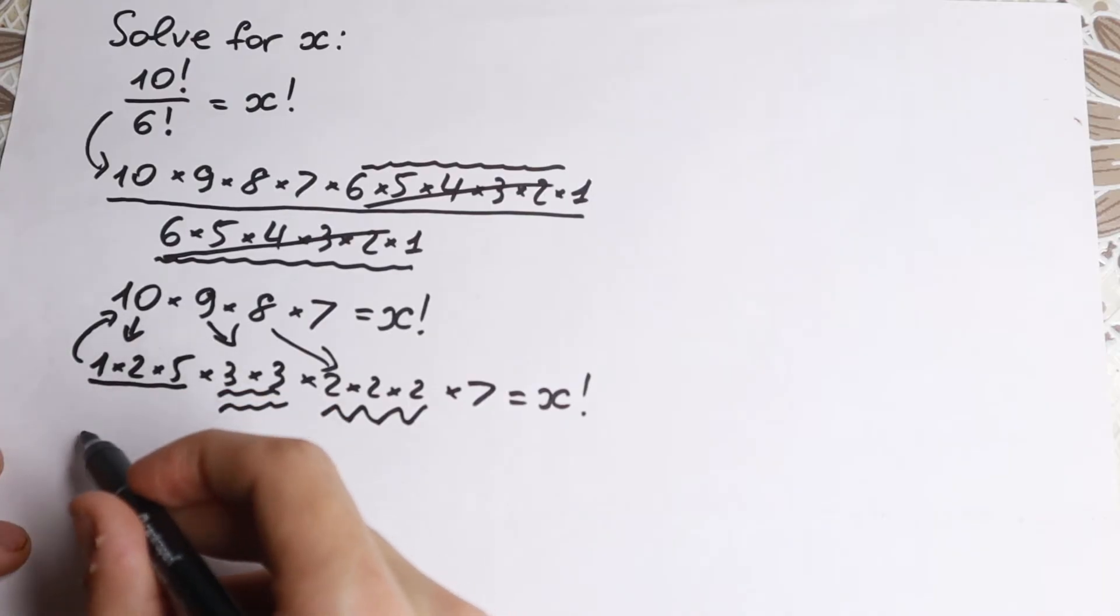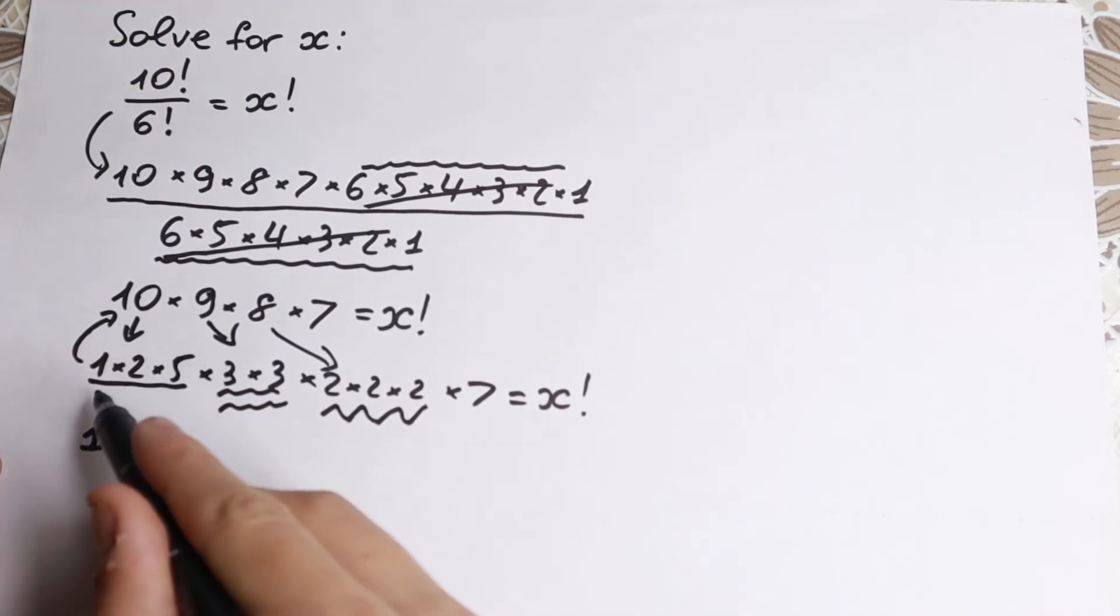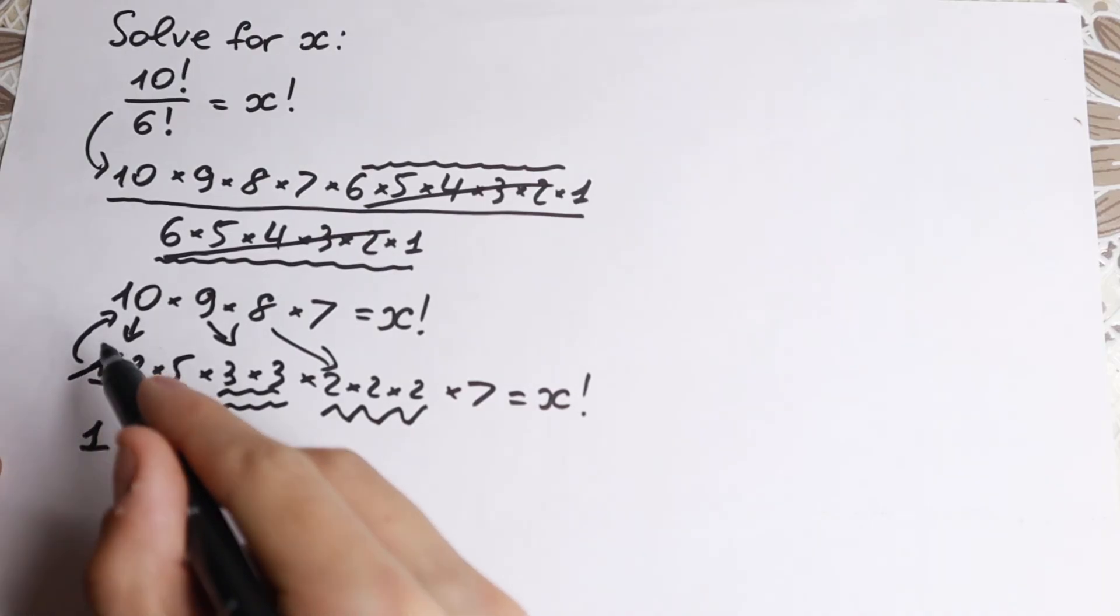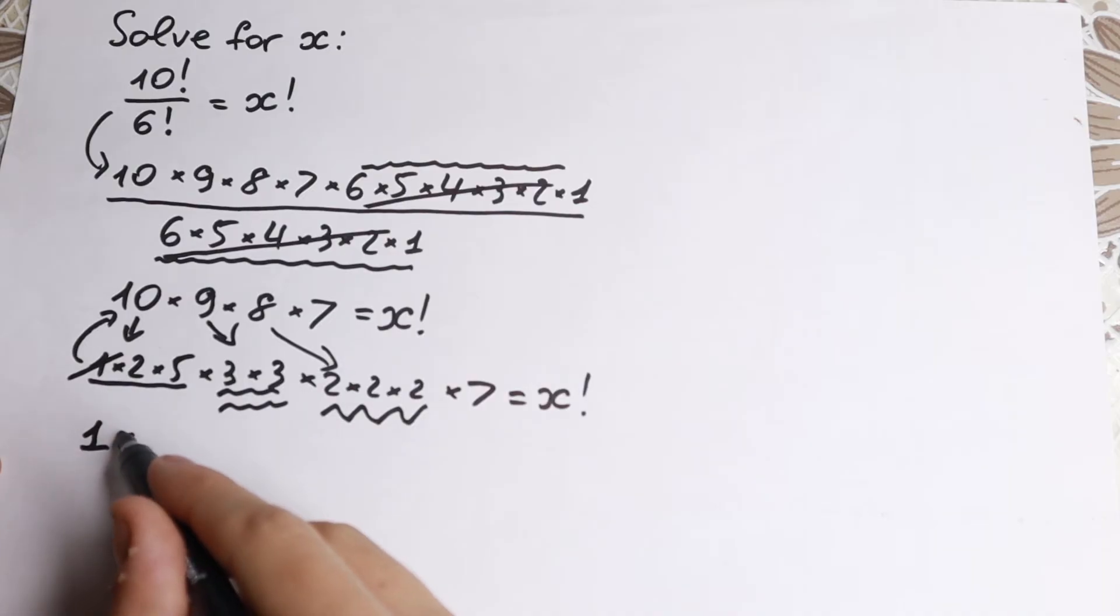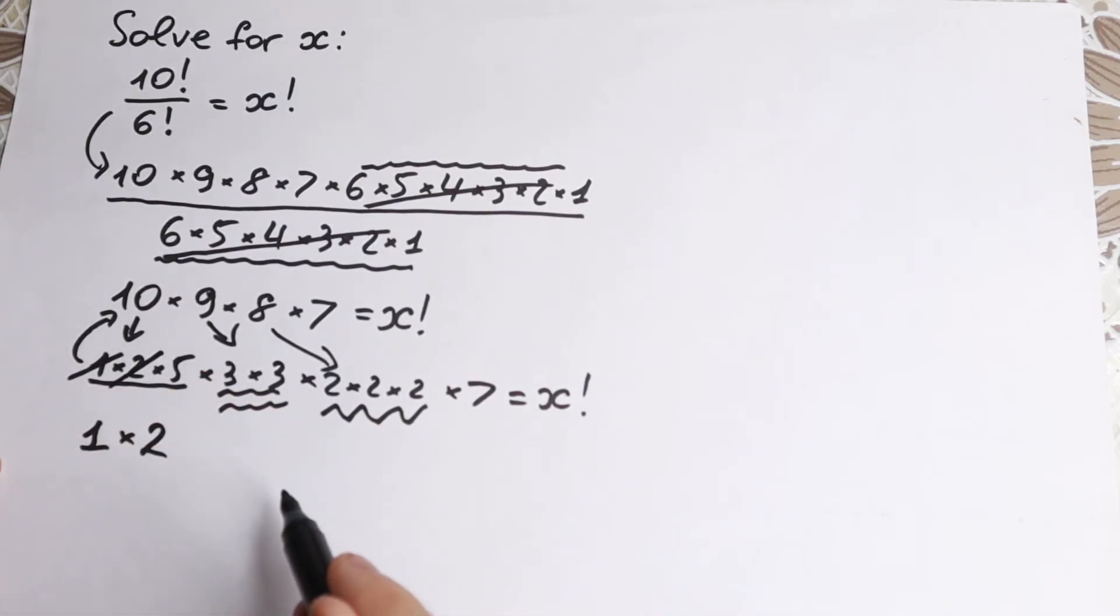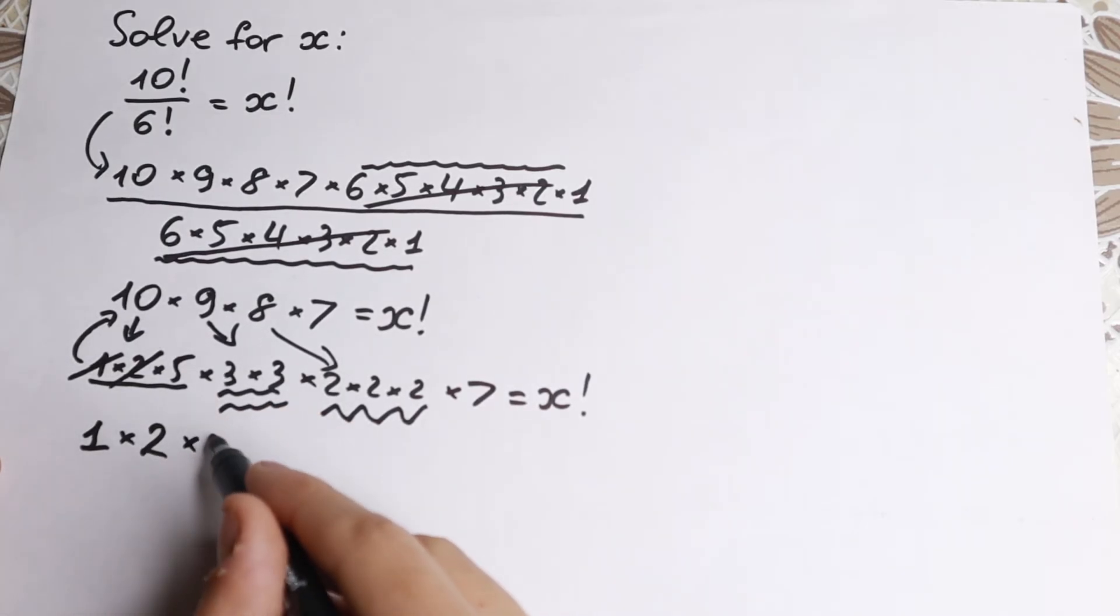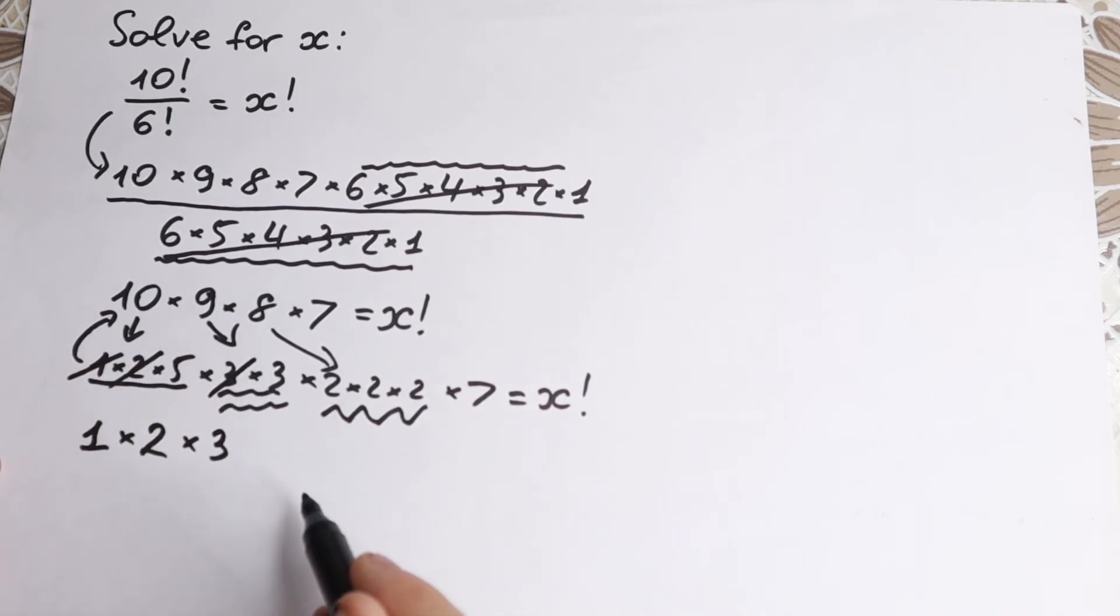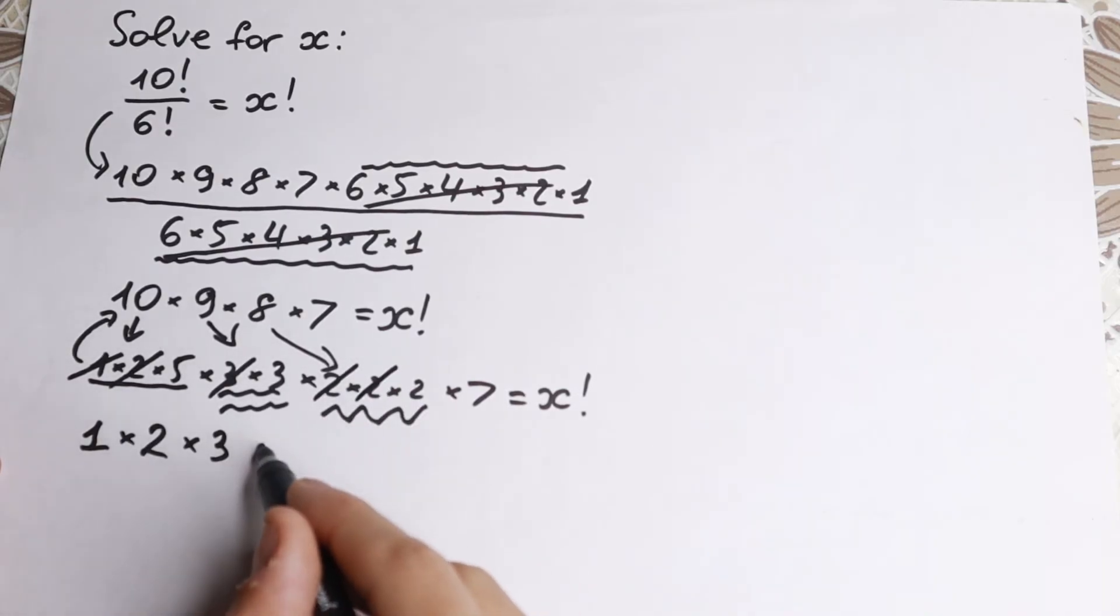So we have 1. Right here we have 1. So let's write this 1. And right here I cancel this 1 because we cannot use this more. Let's go with 2. Let's find 2. We find 2. So times 2. And I cancel this 2 right here. The next one. We need 3. So 3 I have right here. So times 3. And I cancel this. What about 4? So let's look. We have 2 times 2. This is our 4. So we have 4. And I cancel this. So times 4.